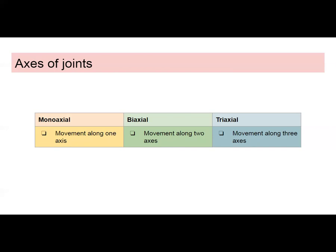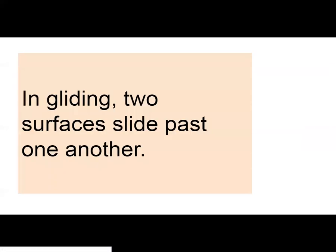Axes of motion can be monoaxial, biaxial, or triaxial. Move along one axis — it's monoaxial. Move along two axes — it's biaxial. Move along three axes — it's triaxial. Gliding joints have surfaces that move past each other.